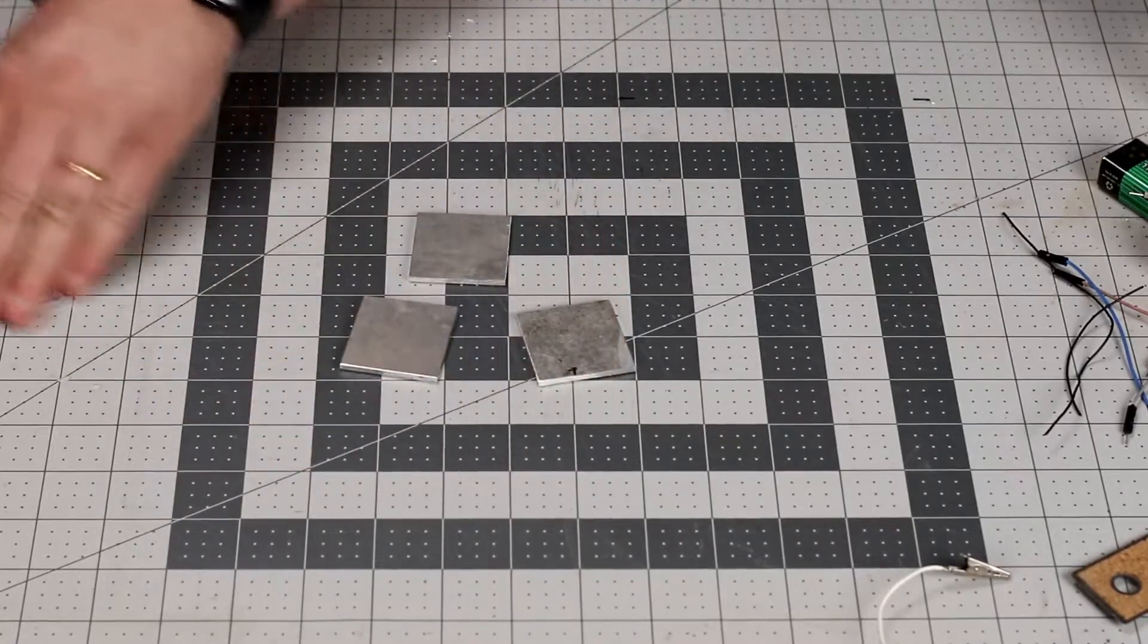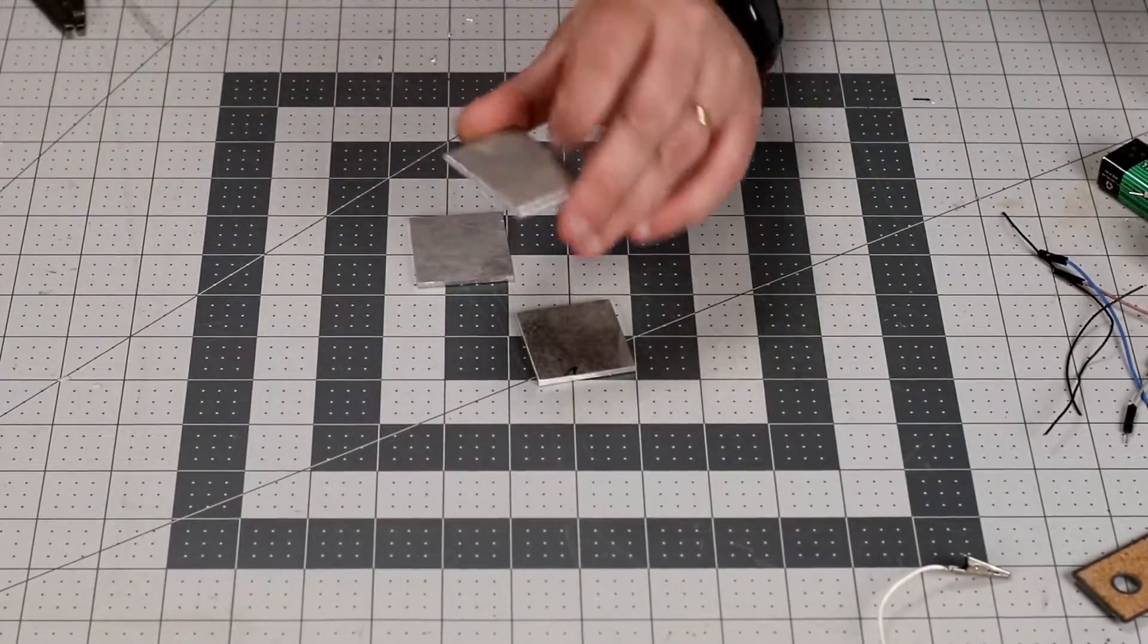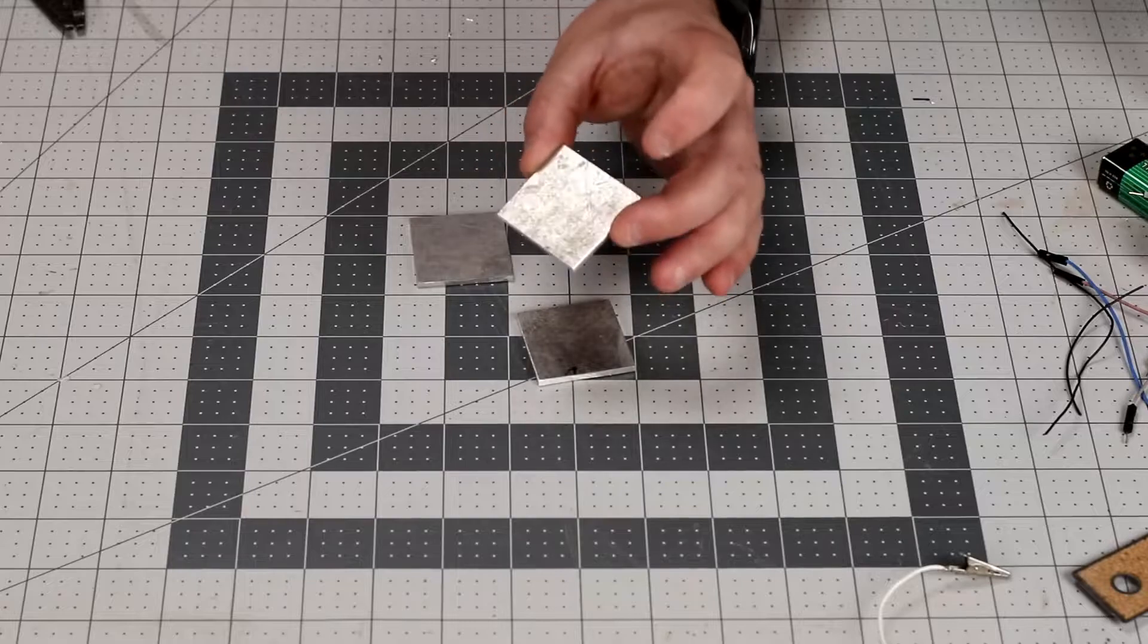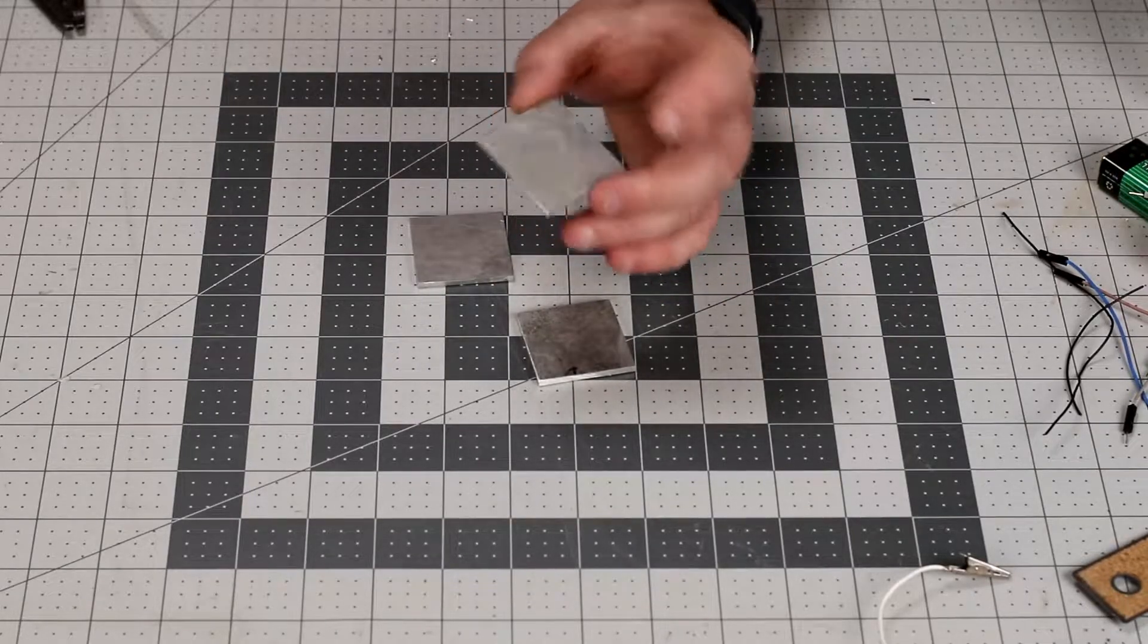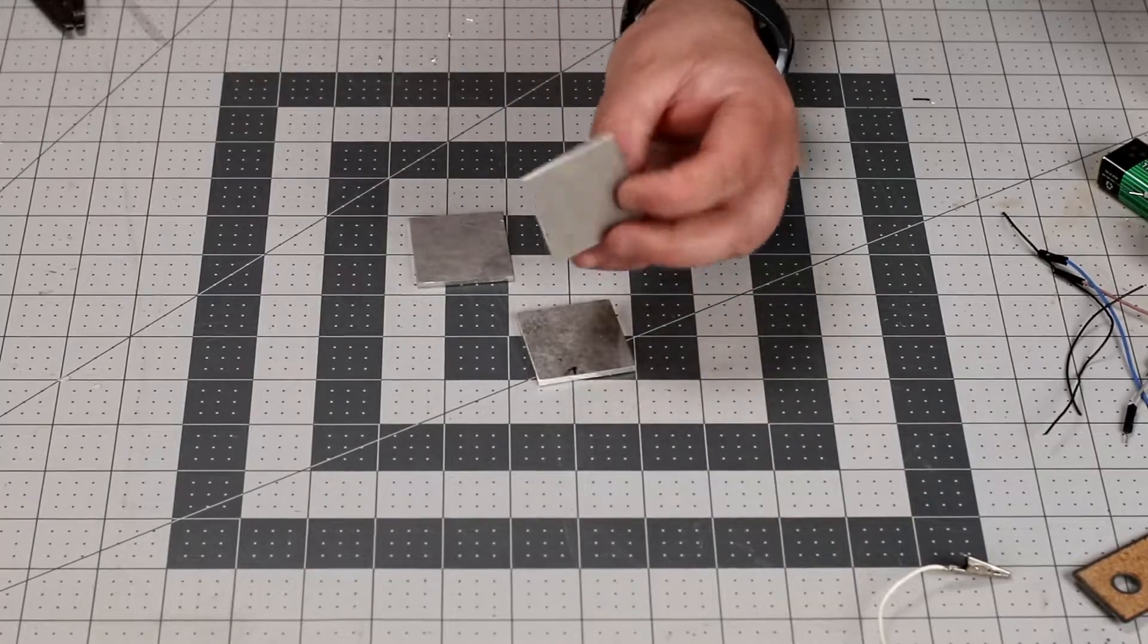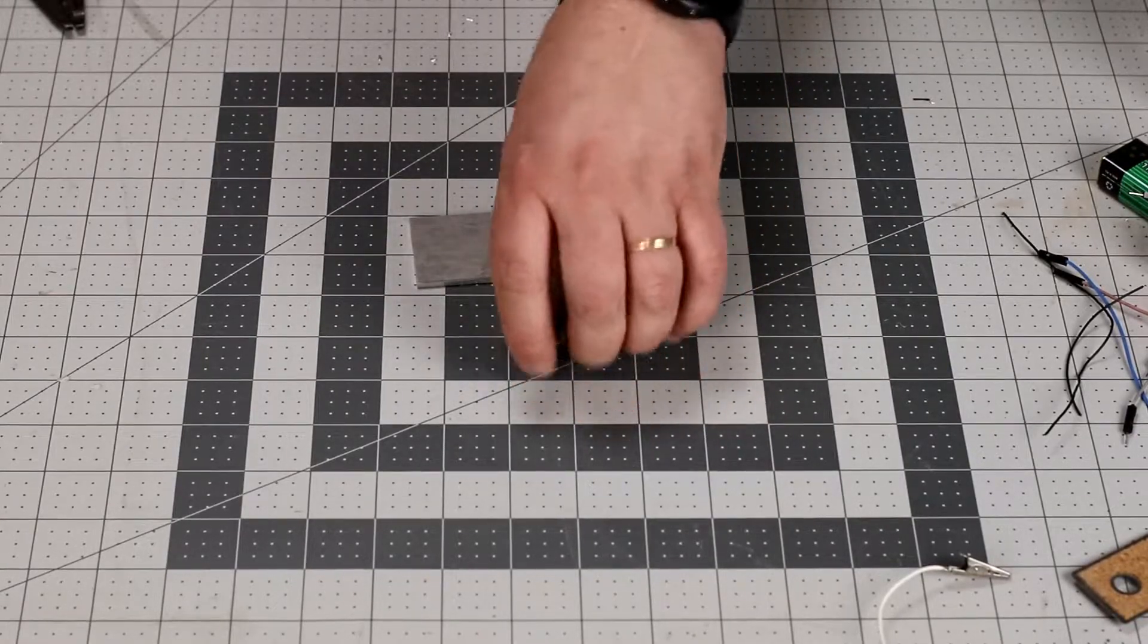So what you'll need is some kind of metal. Now this will work with aluminum, copper, stainless, regular steel, about any kind of metal I believe you should be able to etch with this.